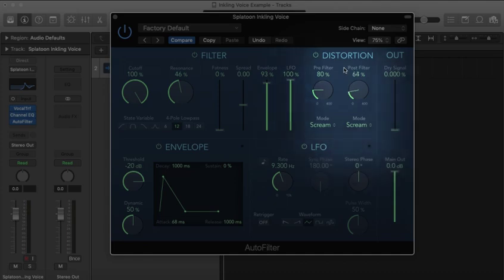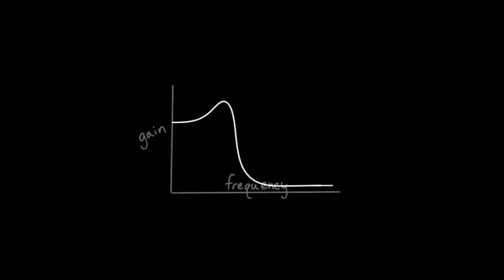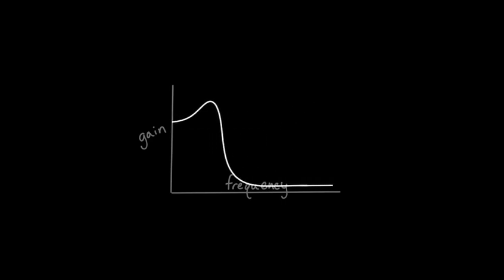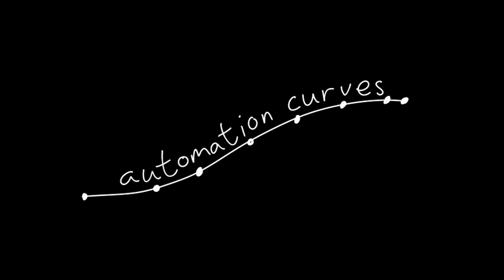Finally, we don't want any of the dry, unaffected signal — we only want what the signal is like after this filter. That gives us a pretty close, quick and dirty inkling voice filter. However, you can give this an even closer character to the original inkling voices by changing the amount and rate of LFO modulation over time with automation curves.